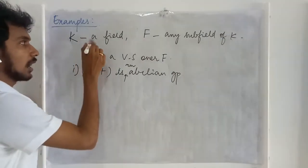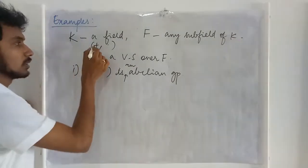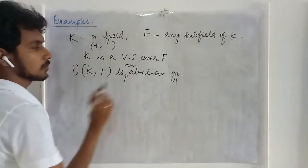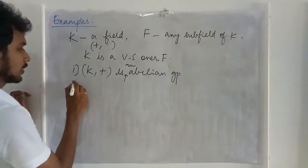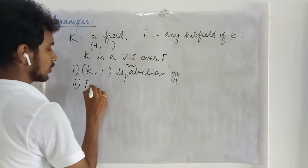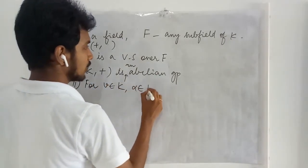Since this is a field, the addition and multiplication operations are defined in that. With respect to this addition this forms an abelian group. That is the definition. That comes under the definition of a field itself.